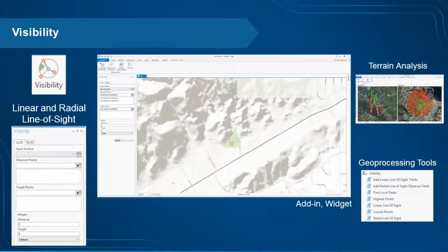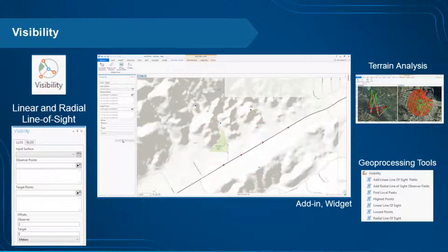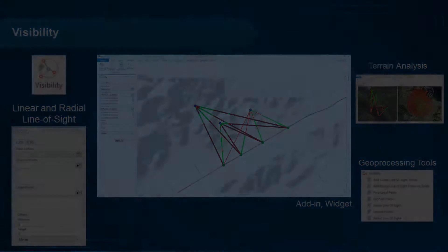Visibility allows you to perform both linear and radial line of sight analyses. Linear line of sight determines if a target or targets are observable from one or more locations, while radial line of sight determines what is visible from one or more observer locations based on a given distance and field of view.